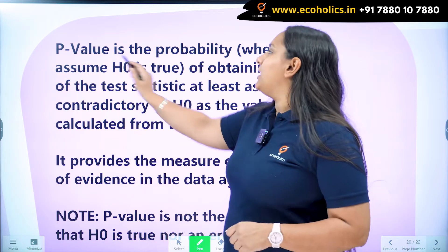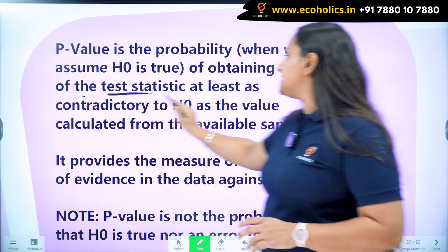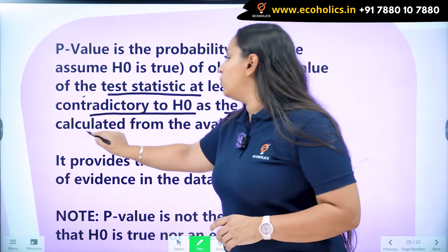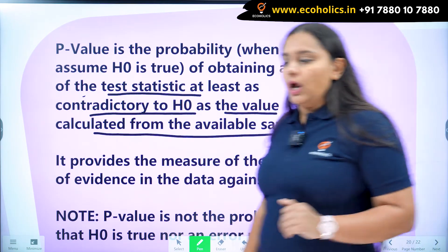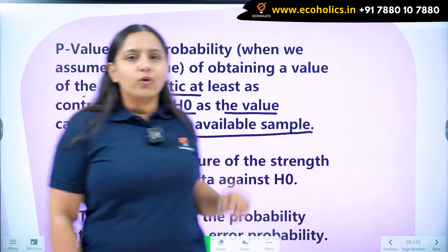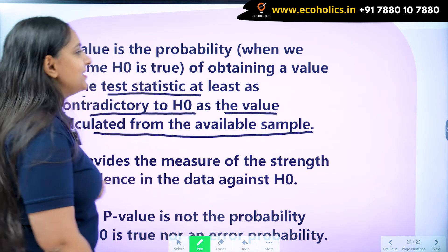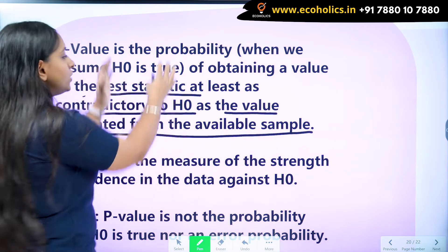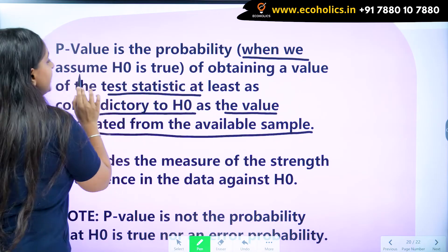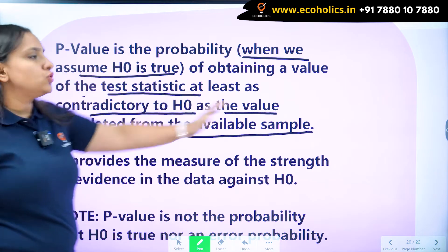So what is p-value? P-value is the probability of obtaining a value of the test statistic at least as contradictory to H0 as the value calculated from the available sample. Now you will think this is such a complicated definition. But I will break this into parts and help you to understand it better. One very important thing: when we are talking about the p-value, we have to assume that H0 is true.